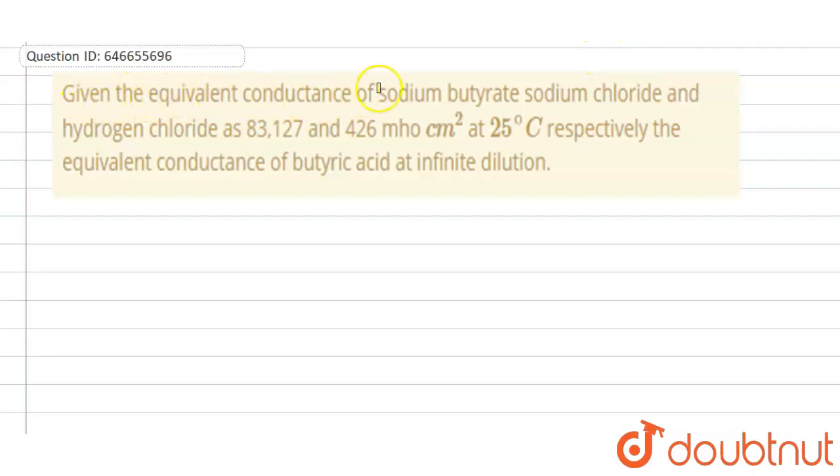Given the equivalent conductance of sodium butyrate, sodium chloride and hydrogen chloride as 83, 127 and 426 mho centimeter square at 25 degrees Celsius respectively, the equivalent conductance of butyric acid at infinite dilution. So we need to find out the butyric acid lambda equivalent at infinite dilution.